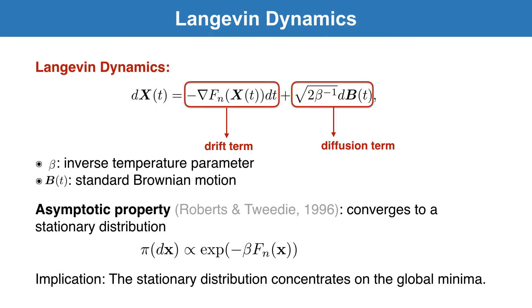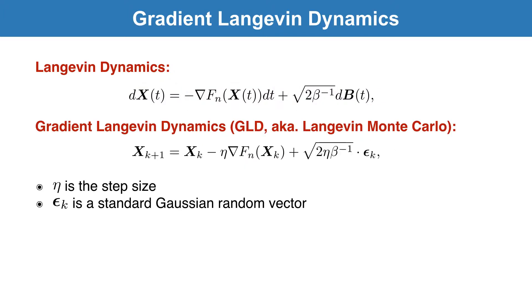Therefore, we can use Langevin dynamics to design algorithms that converge to the global minima of a potentially non-convex function. Gradient Langevin dynamics, or GLD, is the discretization of Langevin dynamics. We will prove that GLD converges to the global minimizer of f.